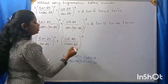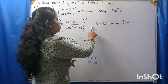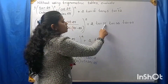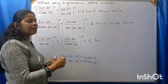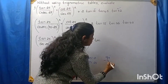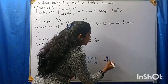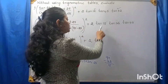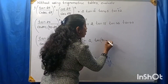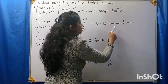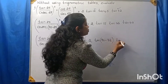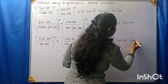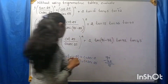Plus 2 tan — this 18° I can write as 90° minus 72°, because 90 minus 72 is 18°. Therefore, this 18° I will write as 90° minus 72°. Into tan 72° into tan 45°.